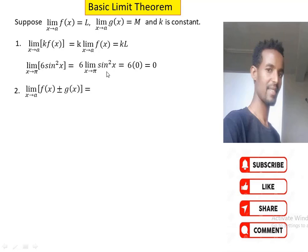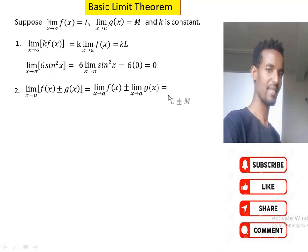Rule 2 is the sum and difference rule. The limit of f(x) ± g(x) as x approaches a becomes the limit of f(x) as x approaches a, plus or minus the limit of g(x) as x approaches a. Since the limit of f(x) is L and the limit of g(x) is m, we have L ± m.